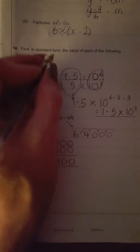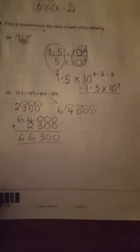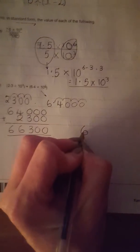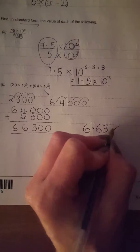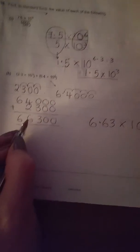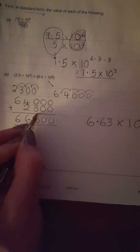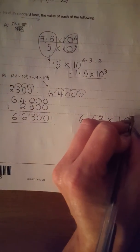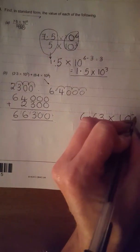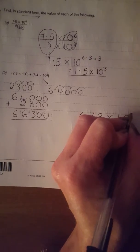However, they want it in standard form. So I've got 6.63 times 10 to the power of 1, 2, 3, 4 and it's minus, no sorry, it's 4.